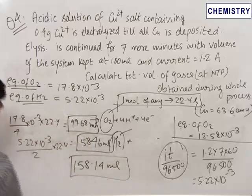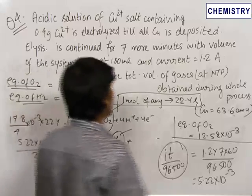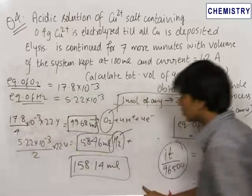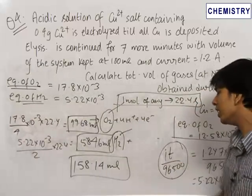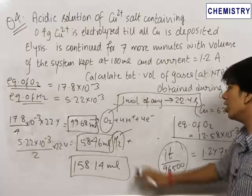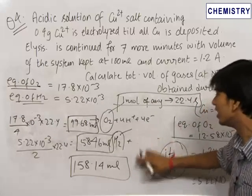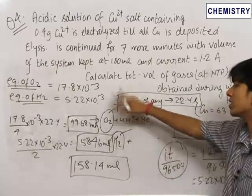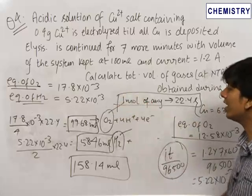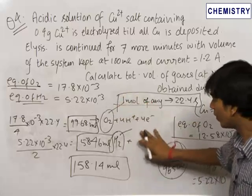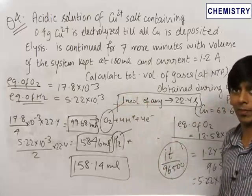The total volume of gases produced comes out to be 99.68 + 58.46 = 158.14 ml. So the final answer for the total volume of gases produced is 158.14 ml. The important thing learned from this question is how to write the equations for oxidation and reduction of water at each electrode during electrolysis.